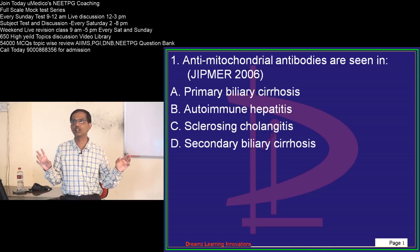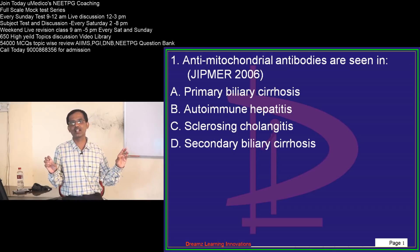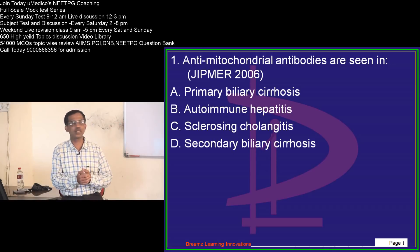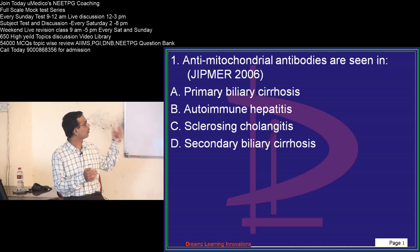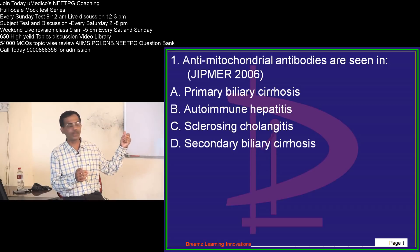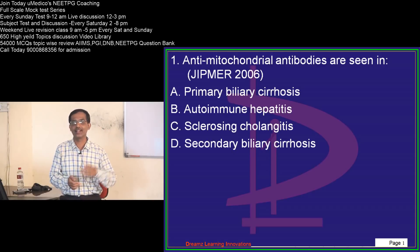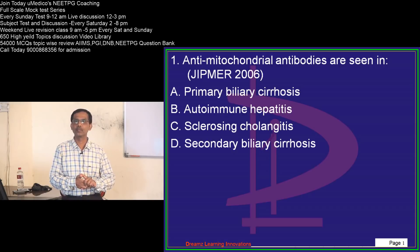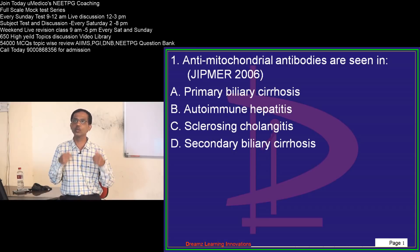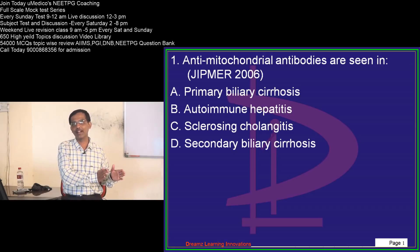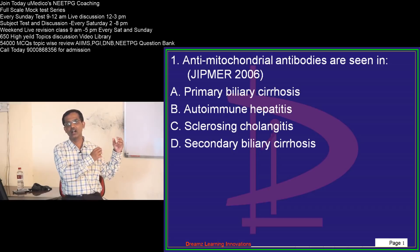Once you start looking at the options, analyze each one carefully. These days the options are quite related to each other and very close. As you can see from this MCQ — they are talking about antibodies and the options given are autoimmune hepatitis, primary biliary cirrhosis, sclerosing cholangitis, and secondary biliary cirrhosis. At least in three of them we will have antibodies, so you cannot easily rule them out. Apply your prepared knowledge and try to solve in the light of the question asked.